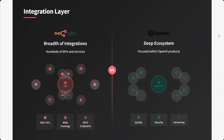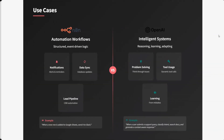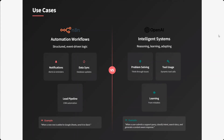For use cases: n8n can be used for automation workflows — notification, data sync, lead pipeline — anything that doesn't necessarily require intelligence. While OpenAI Agent Kit is more for intelligent systems. The key difference is that an automation workflow handles general tasks without requiring intelligence, while OpenAI Agent Kit has AI agents at its core.